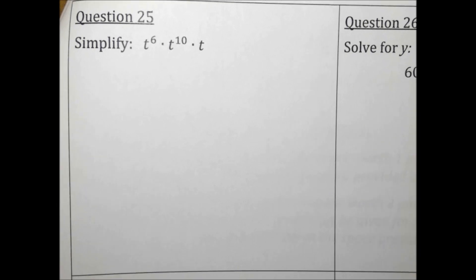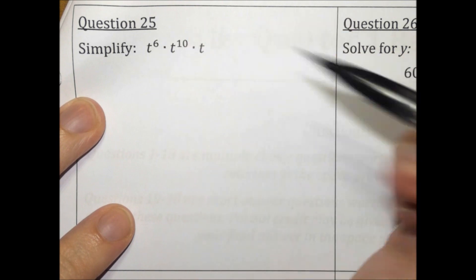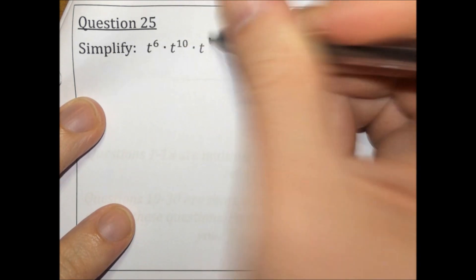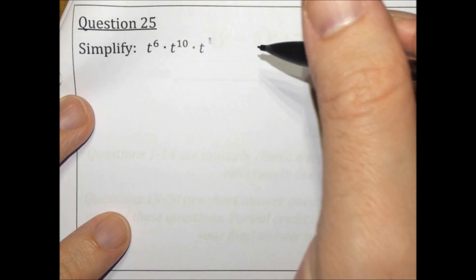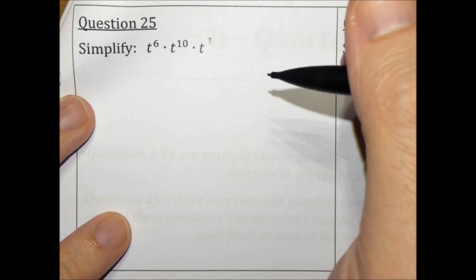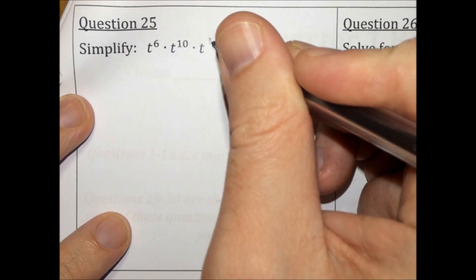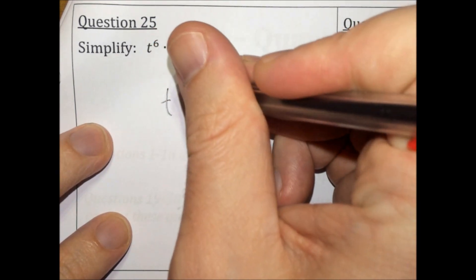Simplify. When you multiply, you add exponents, as long as the bases are the same — which they are. This t has a secret exponent of 1. So when we multiply, we add all the exponents: 6 plus 10 plus 1, which is 17. t to the 17th is the answer.